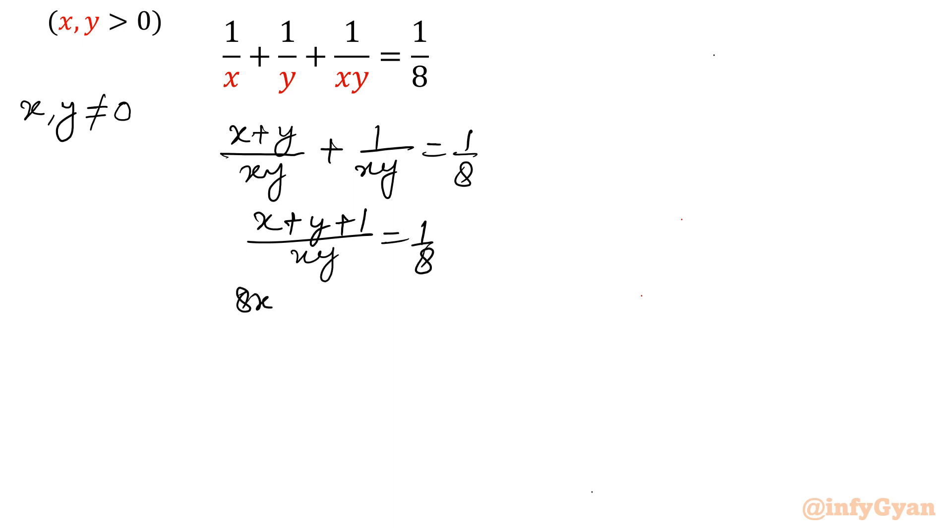Cross multiply: 8x + 8y + 8 = xy. Take all the variables to one side and constant to other side. So xy - 8x - 8y = 8.